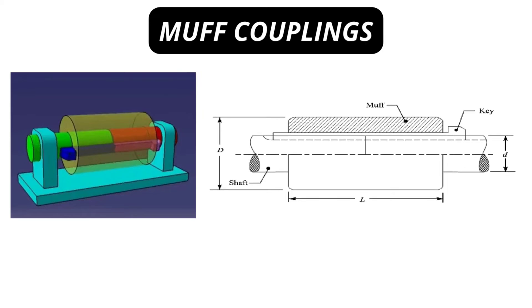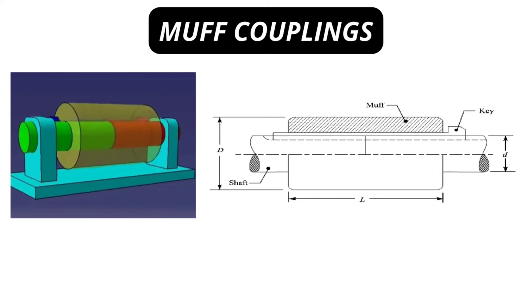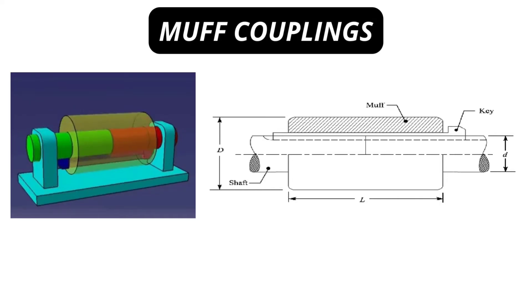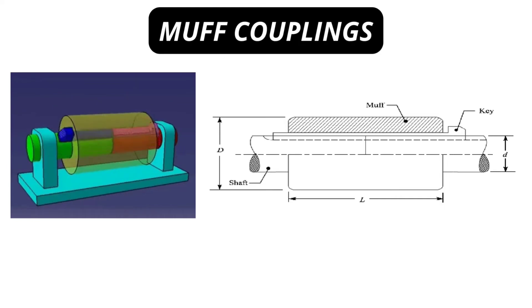Muff coupling, also called sleeve coupling, is the simplest type of rigid coupling. It consists of a hollow cylinder whose inner diameter is the same as the shaft. It is fitted over the ends of the two shafts by means of a gib head key. The power is transmitted from one shaft to the other by means of a key in the sleeve or muff.